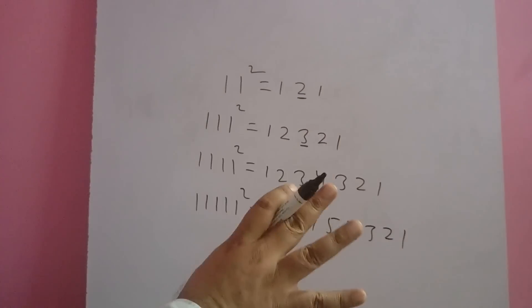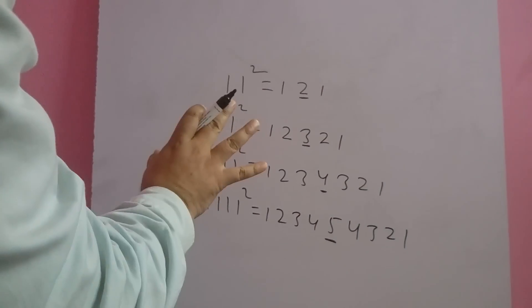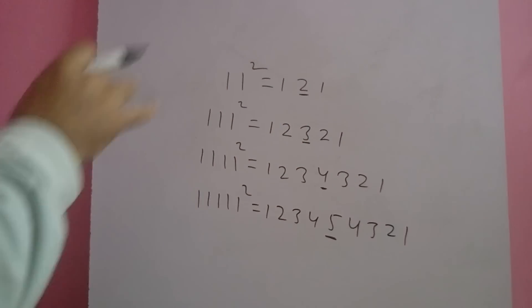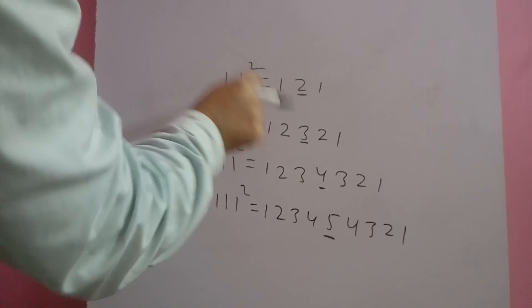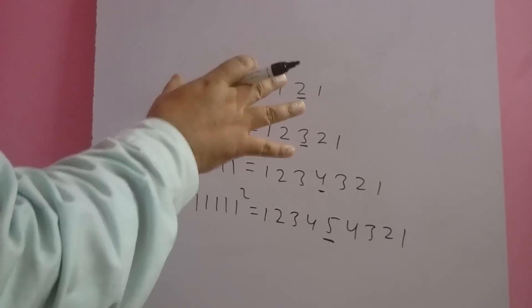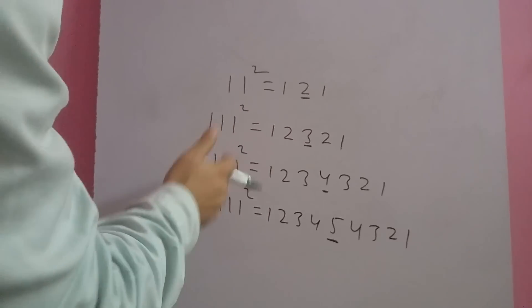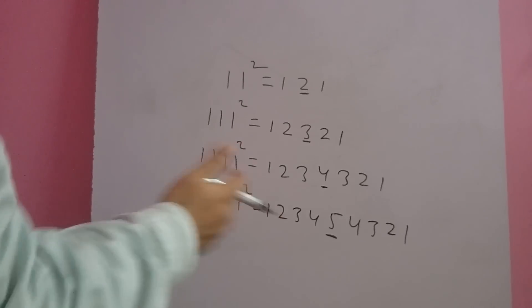But you should remember that this rule is true for only such type of square of a number which are made of one only. The number should be made of one only: 11 square, 111 square, 1111 square, and so on.